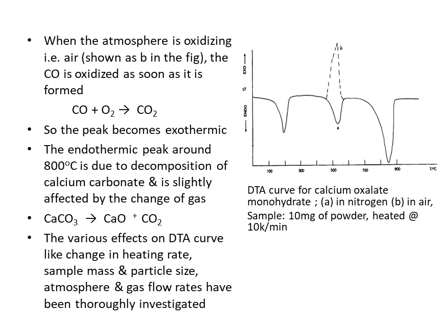The third peak is a downward endothermic peak around 800 degrees centigrade, similar in both nitrogen and air environments, corresponding to the decomposition of calcium carbonate into calcium oxide and carbon dioxide. The effects of heating rate, sample mass, particle size, atmosphere, and gas flow rates on DTA curves have all been thoroughly investigated.